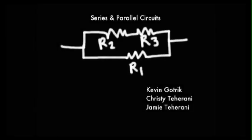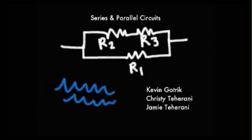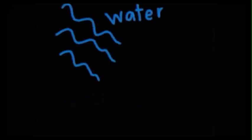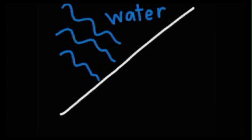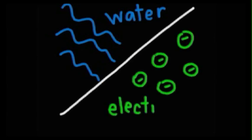Hi, today we're going to discuss series and parallel circuits, and to do so we're using a water analogy. We use a water analogy because we can see water and it's very hard to see electrons and how electrons flow through a circuit. Now let's go in the lab and explore how we made this analogy come to life.